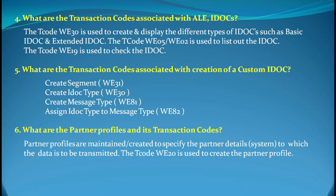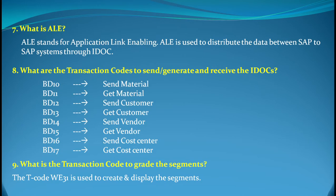The sixth question is: what are partner profiles and their transaction codes? Partner profiles are created to specify the partner details — the partner to which data is to be transmitted. The T-code WE20 is used to create a partner profile. The partner here doesn't just mean a person; it could be a system, an organization, or anything — you have all the details of your partner stored with respect to that system.